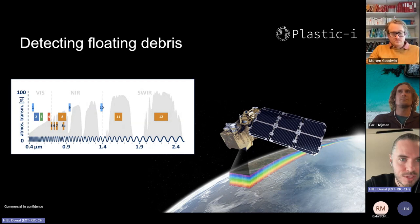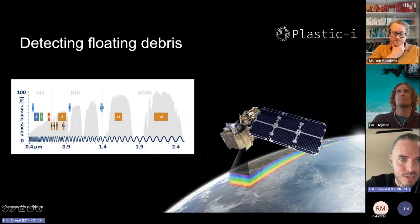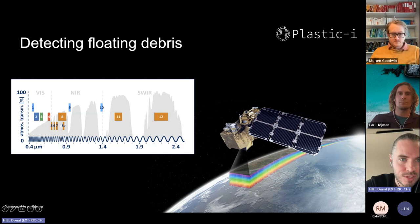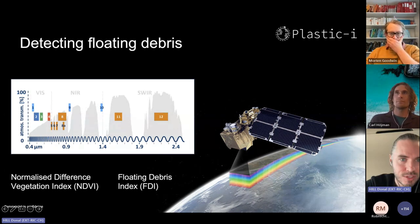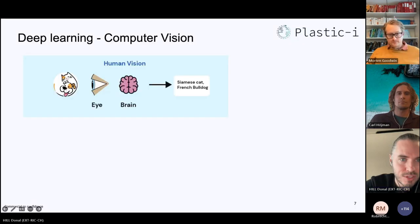For detecting floating debris, what matters is the unique signal of debris on the ocean surface compared to surrounding water and other objects like ships. In practice, it works to exploit all the different wavelengths the satellite sees — this is a graph of the 13 colors the ESA Sentinel-2 satellite sees. You get rich information on floating debris through near-infrared and shortwave infrared, not just visible colors. Through clever combinations of wavelength bands — called feature engineering — people have made indices more sensitive to floating debris and vegetation.